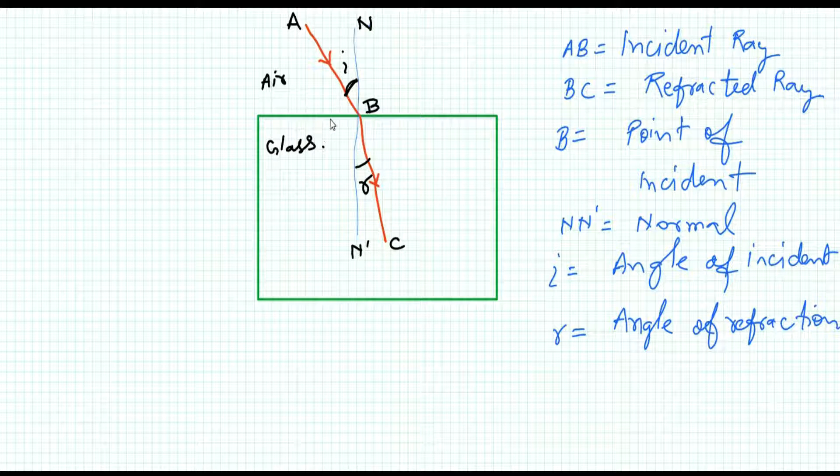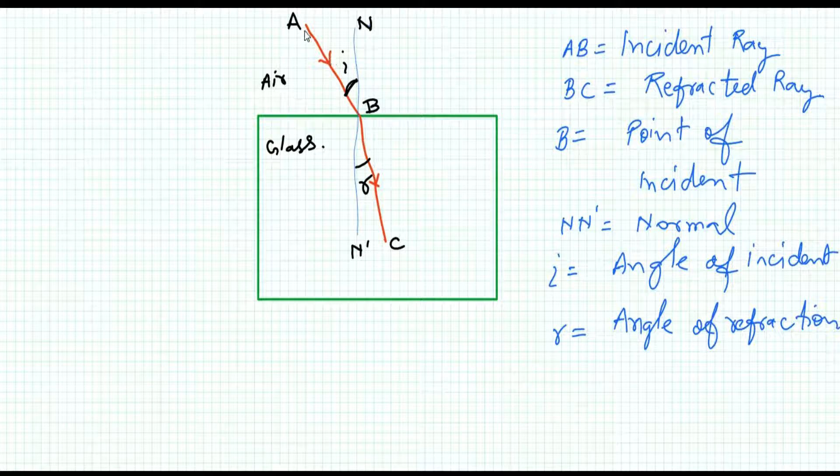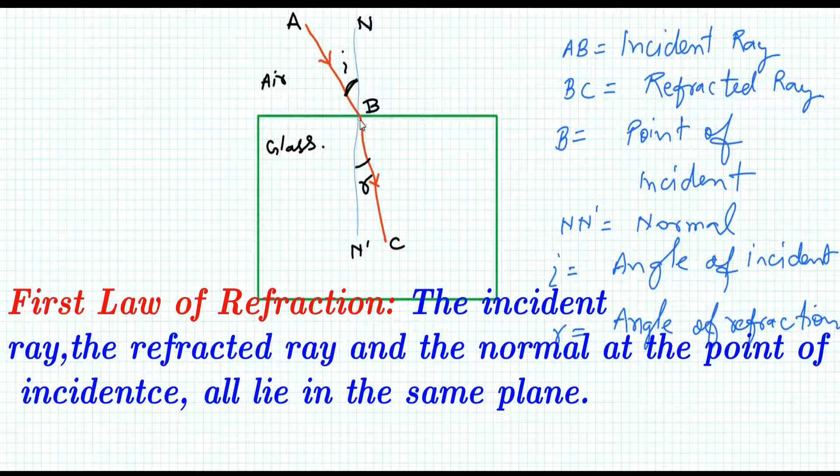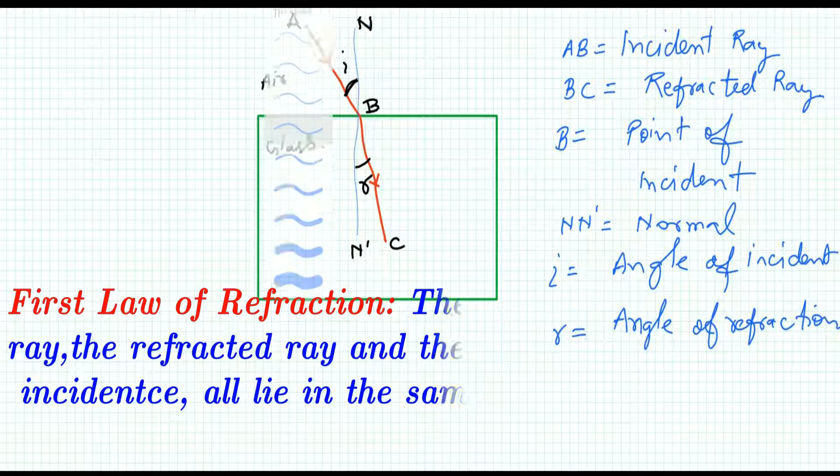According to the first law of refraction, the incident ray AB, the refracted ray, the normal at the point of incidence, all lie on the same plane. This is the first law. So all lie on the same plane, what does it mean?